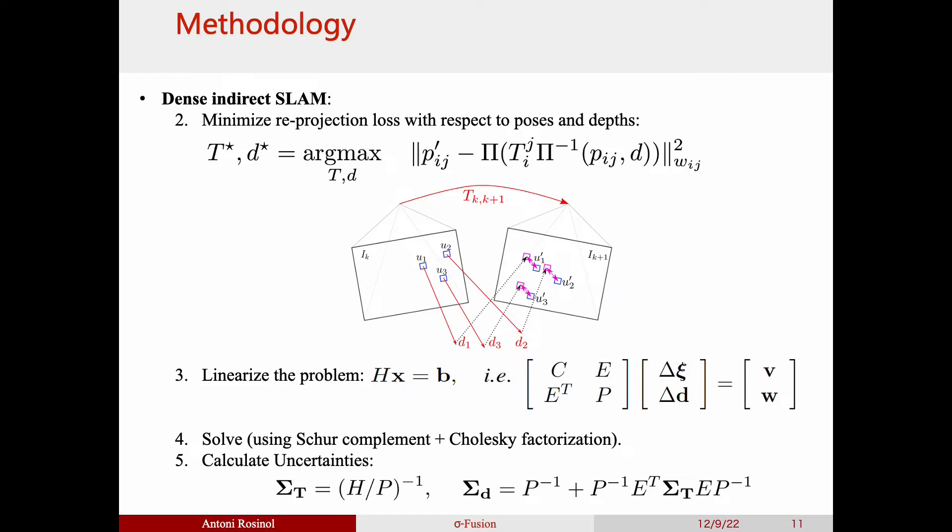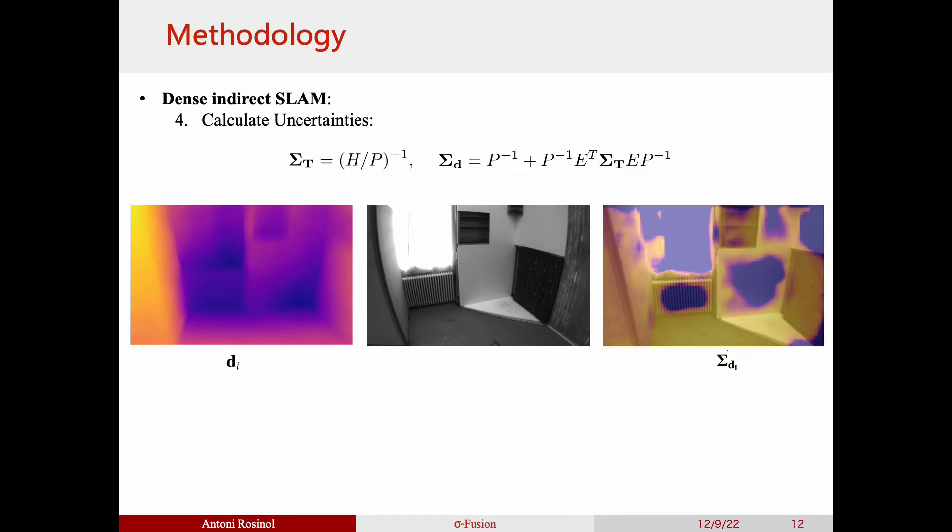Reusing these calculations, we show in the paper how to compute the pose and depth's marginal covariances. Here we show on the left one of the depth maps for a frame shown in the middle, with the resulting depth uncertainty on the right.